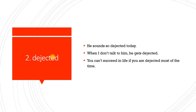Take examples. Number one: He sounds so dejected today. Woh aaj bahut udaas lag raha hai. Yahan pe 'sound' ka matlab hai 'look.' Hum kehte hain na woh bahut udaas dikh raha hai ya lagta hai. Theek hai, yeh sound woh music wala sound nahin hai — yeh verb hai yahan pe, aur woh music wala sound noun hota hai.